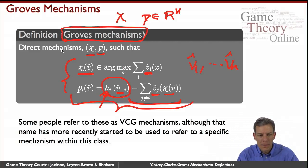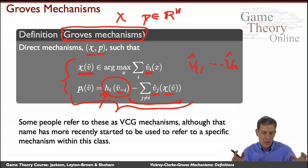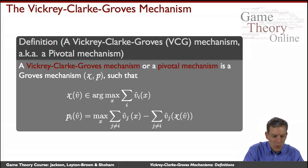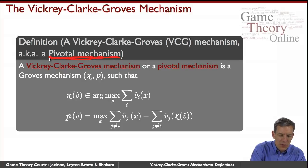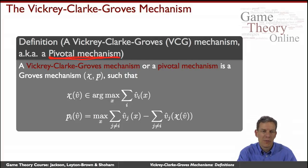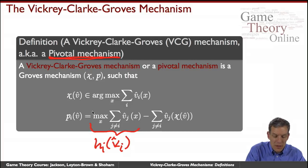Sometimes these are referred to as VCG mechanisms, though that name has more recently been used to look at a situation with a very specific payment rule. Let's look at the special class — the Vickrey-Clark-Groves or pivotal mechanism. These go by different names: in the economics literature it was originally known as the pivotal mechanism; in computer science and game theory it's becoming known as the VCG mechanism. What's specialized here is the H function — H_i of V-hat-minus-I — takes a very specific form.